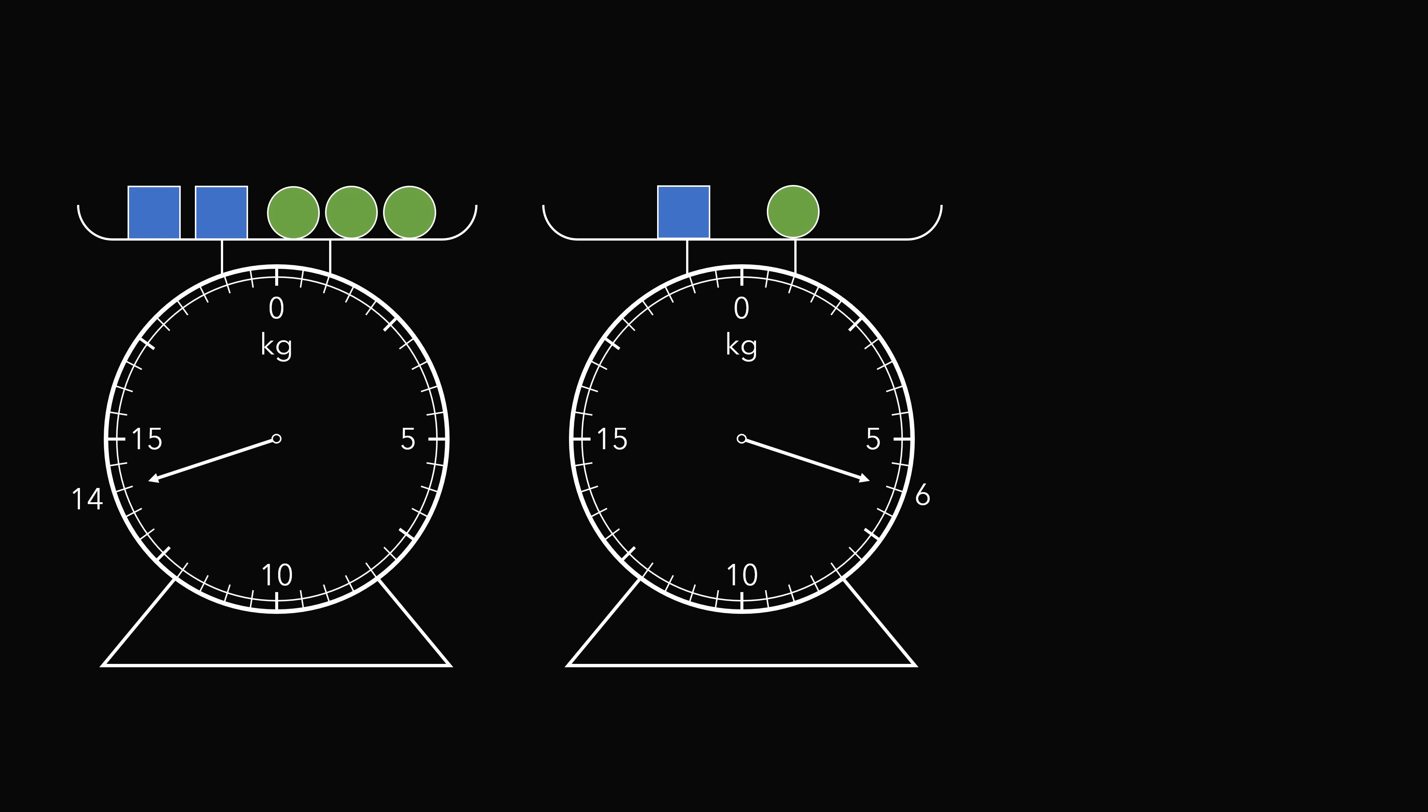So with this information, my first instinct was to solve the problem algebraically. Let the weight of a single square be equal to s. So we have 2 squares on the left. Then let the weight of a single circle be equal to c. We have 3 circles on the left scale.